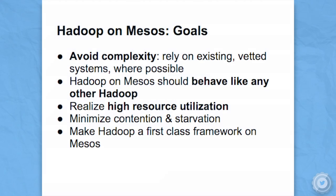So what were our goals? Getting Hadoop running on Mesos — I want to avoid complexity. Hadoop as a system is really quite complicated; there are a lot of knobs. If anyone has ever tried to set up a Hadoop cluster or configure it, it's not fun. Hadoop on Mesos should really behave like any other Hadoop — if people have used Hadoop before, it shouldn't seem any different to them, and hopefully it'll be a little better. We also want high resource utilization — we don't want wasted cycles. We want our money going to use.